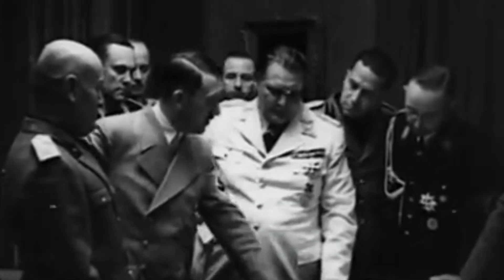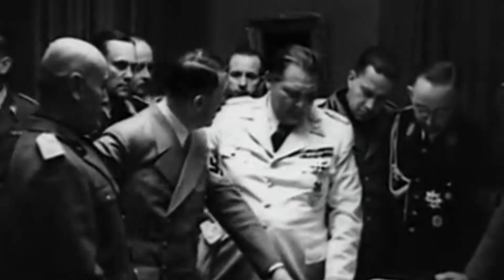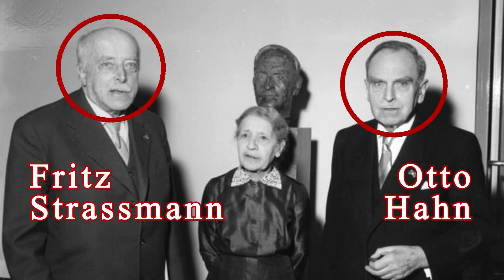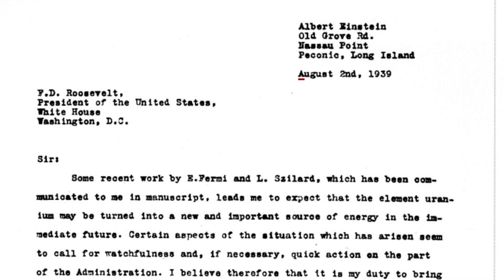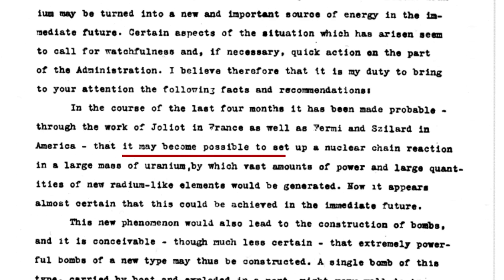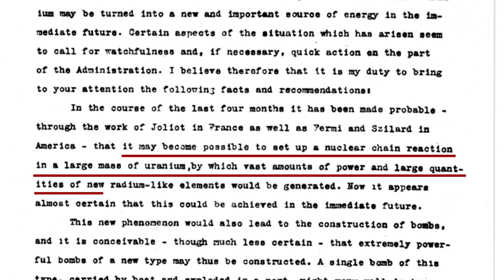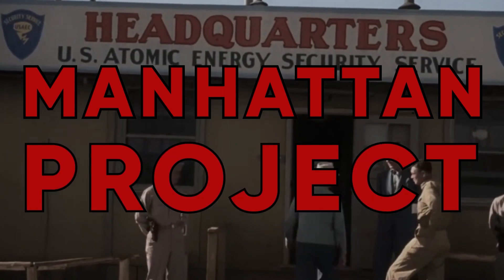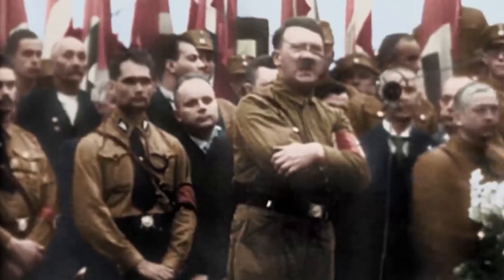Germany started to weaponize radioactive nuclear elements in 1939 after scientists Otto Hahn and Fritz Strassmann discovered nuclear fission. In the same year, a concerned Einstein wrote to American President Roosevelt, warning that it may become possible to set up a nuclear chain reaction in a large mass of uranium, generating vast amounts of power and large quantities of new radium-like elements.